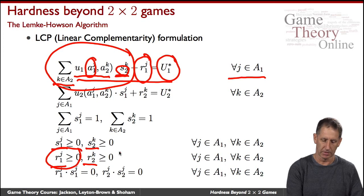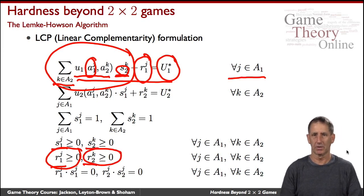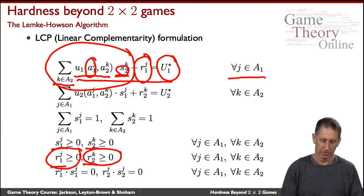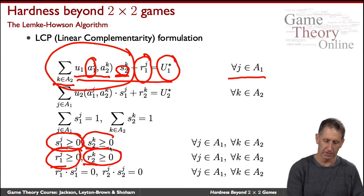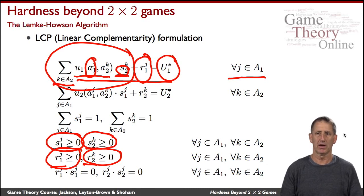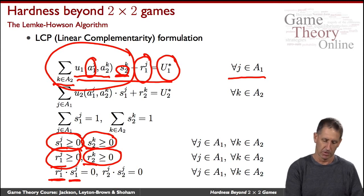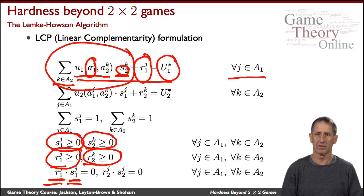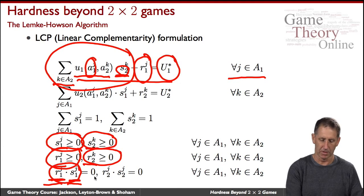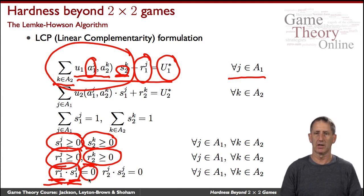The slack variables are always non-negative. In a Nash equilibrium, they will be exactly zero, except for strategies played with zero probability by the player. When player one plays strategy J with non-zero probability, it must be the case that the slack variable is zero. When playing with zero probability, you don't care what the slack variable is because they're not playing that strategy at all — you capture that by requiring that the product be zero. This is exactly the condition that makes it a linear complementarity problem.